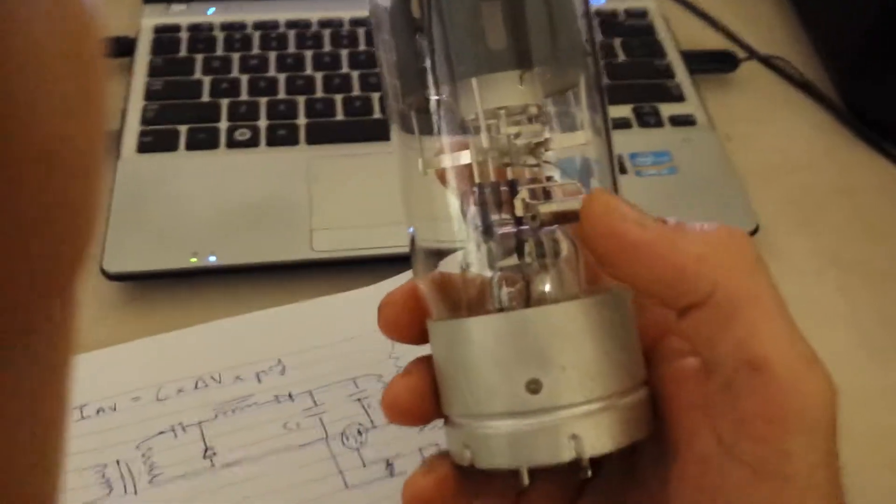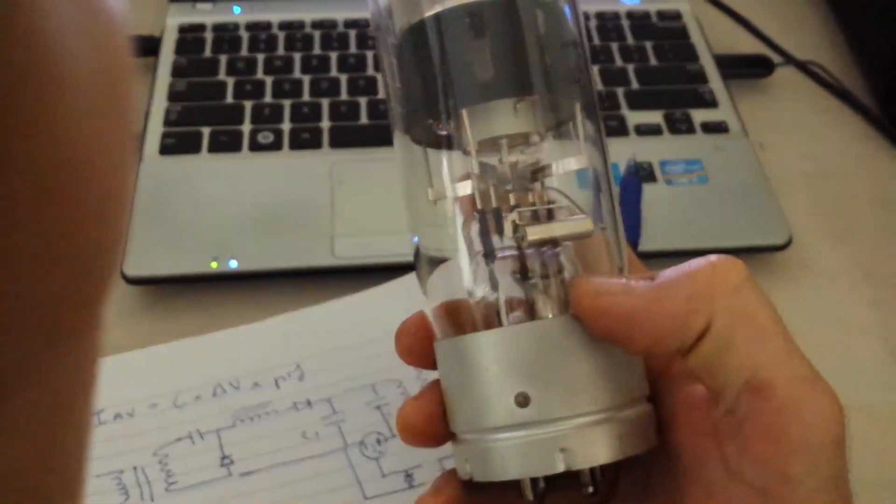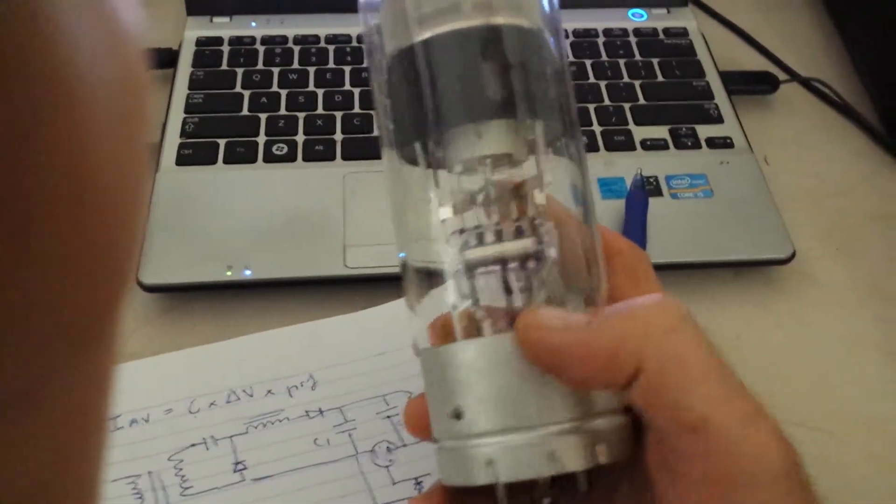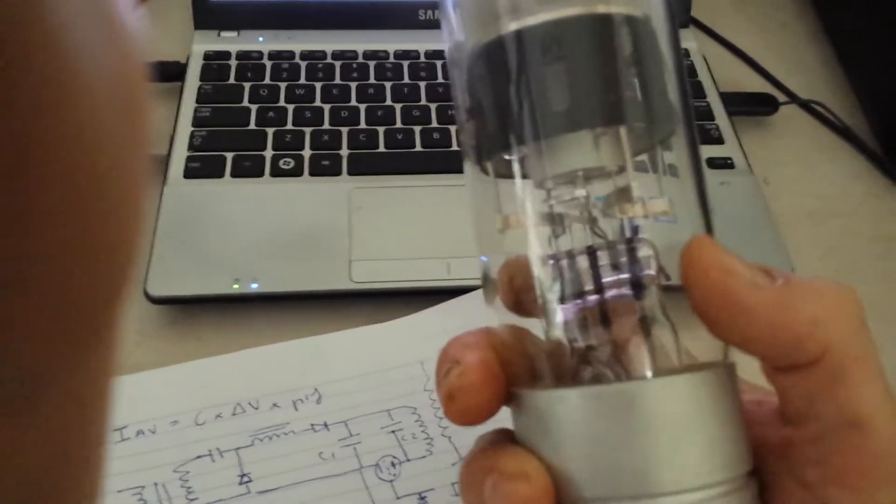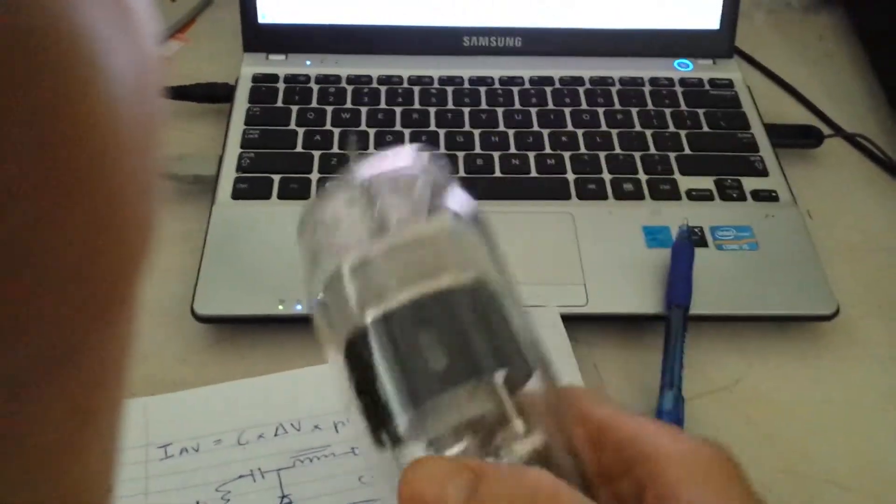The actual problem that I had was, if you can see inside this tube, the grid and the cathode are quite close together, so I was actually getting sparking between the grid and the cathode. But I have this problem with a lot of Russian thyrotrons.